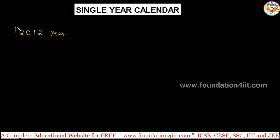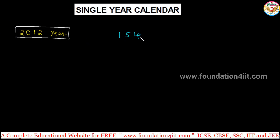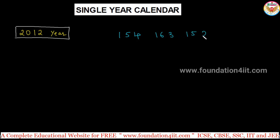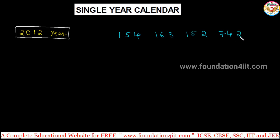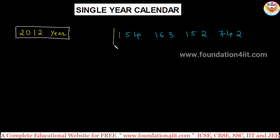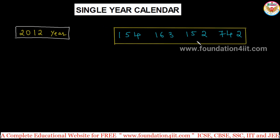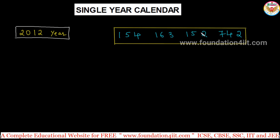For example, let's take the year 2012. I am writing a small code — 154 163 152 742. This code lets you find out any day without needing a calendar. This code is nothing but 12 numbers: 1, 2, 3, 4, 5, 6, 7, 8, 9, 10, 11, 12 — so 12 numbers in this box.